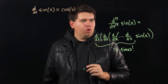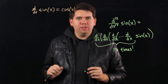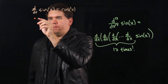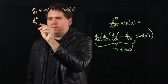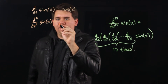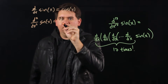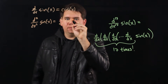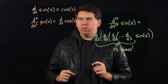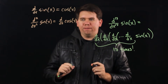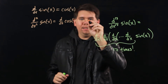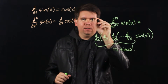Let's think. We know the first derivative is cosine of x — that's taking the derivative once. So if I want to find the second derivative of sine of x, that would just be the derivative of cosine of x. Using a very similar argument to the one we used for the derivative of sine of x, we can find that the derivative of cosine of x comes out to be minus sine of x.